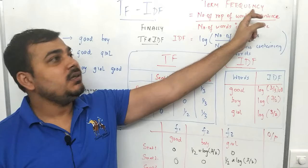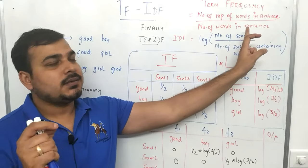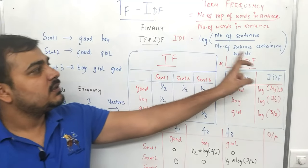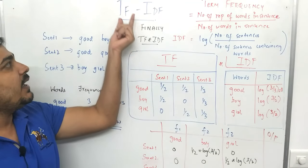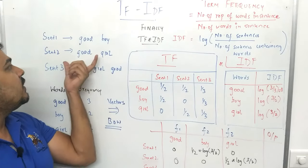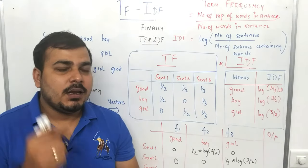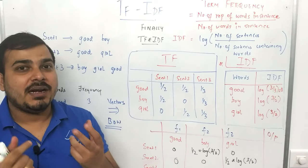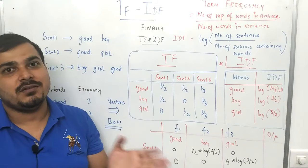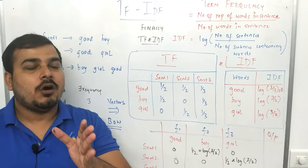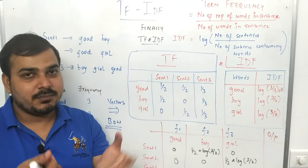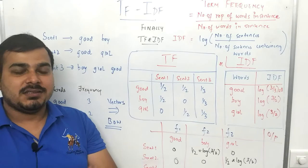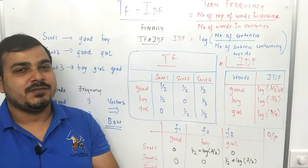TF basically means term frequency — this is the formula — and inverse document frequency is basically this formula. Finally, we multiply term frequency and inverse document frequency to convert the sentences into vectors. One of the disadvantages of bag of words is that there is no semantic meaning, because either we have values like ones or zeros — all the features basically have one value. If you have not seen the previous video, I'd suggest please go to my playlist; the link is given in the description.